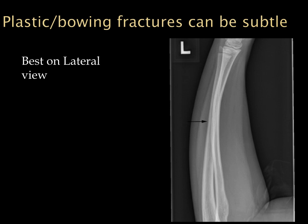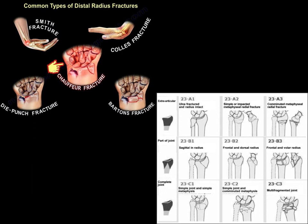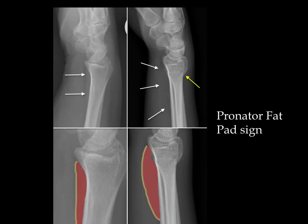In the forearm we also have plastic or bowing fractures, which can be subtle — best seen on the lateral view as increased curvature. For distal radius fractures there is varied nomenclature; Colles' fractures are most common. An important sign is the pronator fat pad sign: on the left we see normal and on the right abnormal, where a fracture hematoma trickles along the forearm and expands the pronator fat pad.